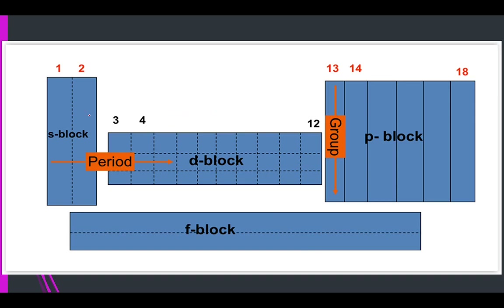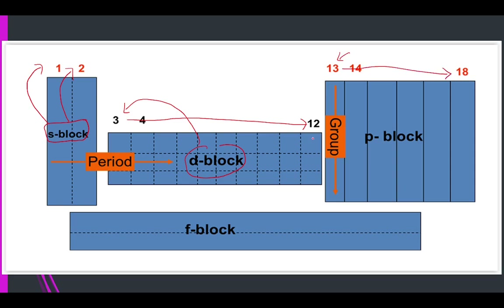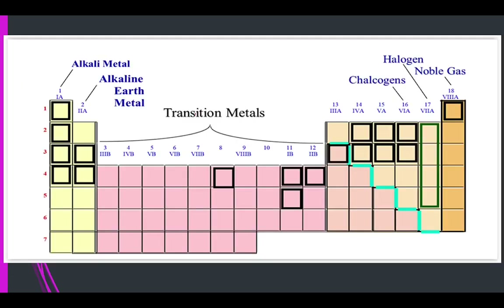From the periodic table that has been separated into blocks: S block refers specifically to group 1 and group 2. D block refers to groups 3 through 12. P block is from group 13 all the way to group 18. At the bottom is F block. The important blocks at this level are P and D block. Group names include: alkali metal, alkaline earth metal, transition metal (groups 3 to 12), chalcogen (group 16), halogen (group 17), and noble gas (group 18).